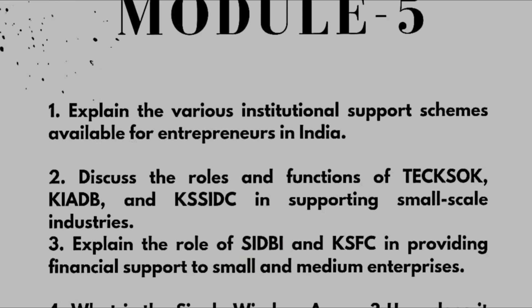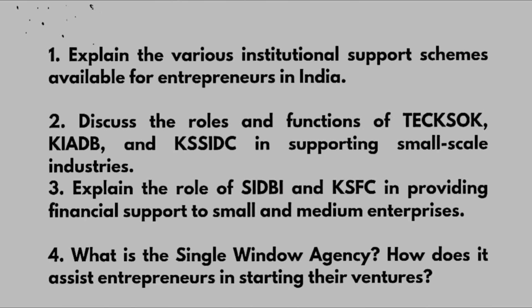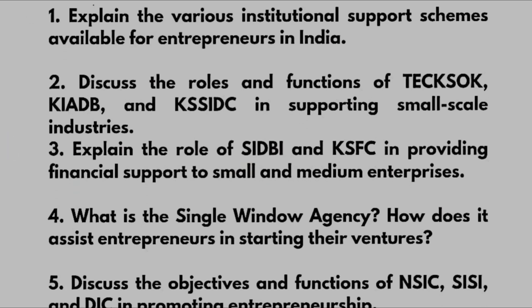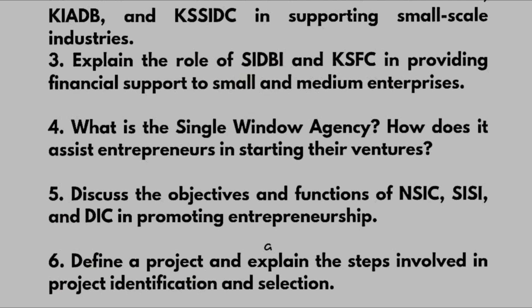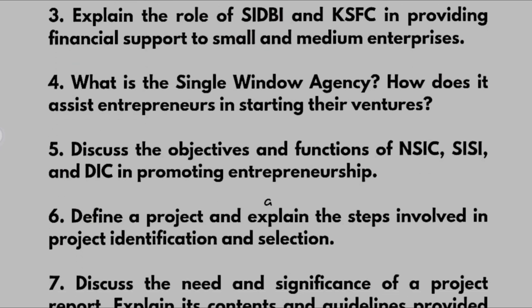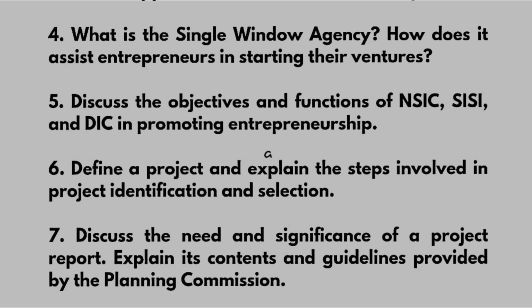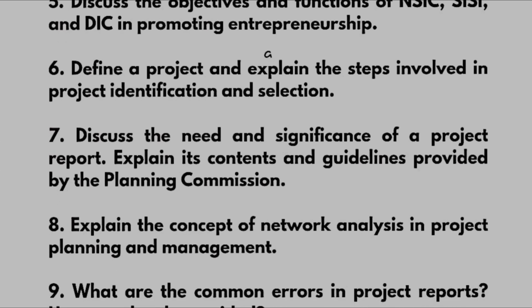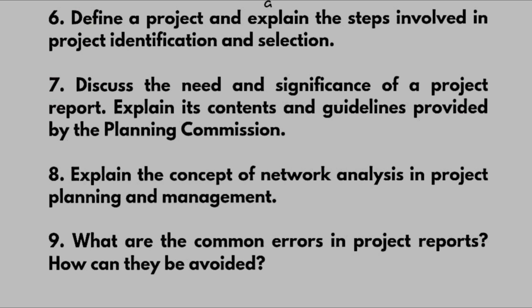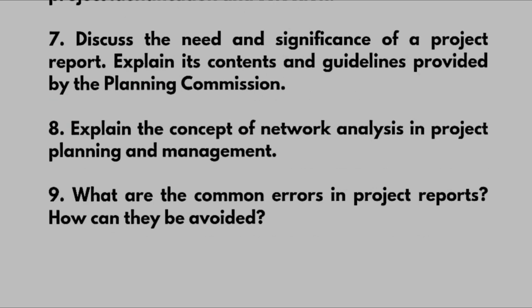In Module 5: Explain the various institutional support schemes available for entrepreneurs in India. Discuss the roles and functions of TECKSOK, KIADP, and KSSIDC in supporting small scale industries. Explain the role of SIDBI and KSFC in providing financial support to small and medium enterprises. What is the single window agency and how does it assist entrepreneurs? Discuss the objectives and functions of NSIC, SISI, and DIC in promoting entrepreneurship. Define a project, explain the steps in project identification and selection, the need and significance of a project report with its contents and planning commission guidelines, and the concept of network analysis in project planning.